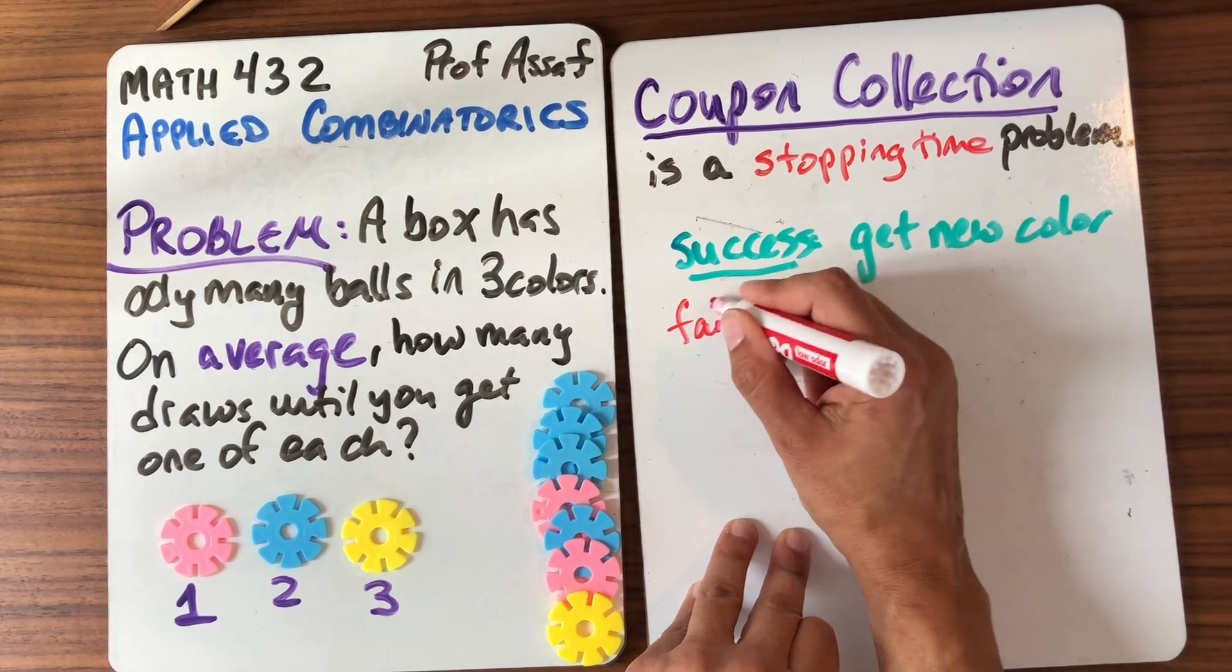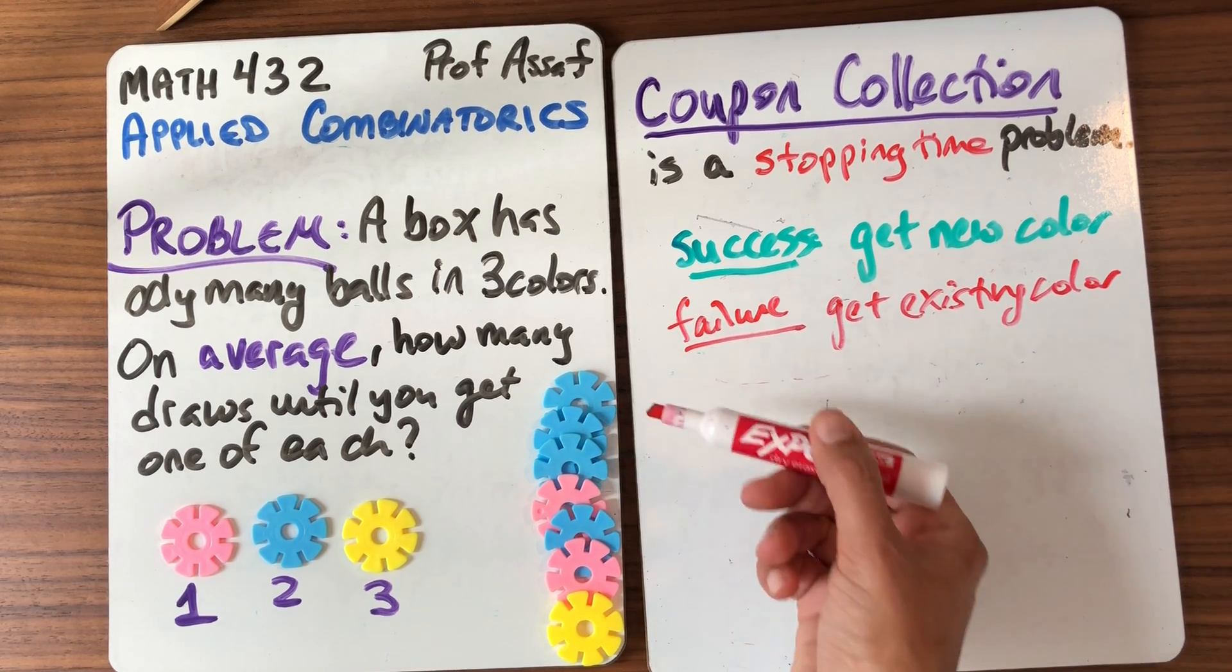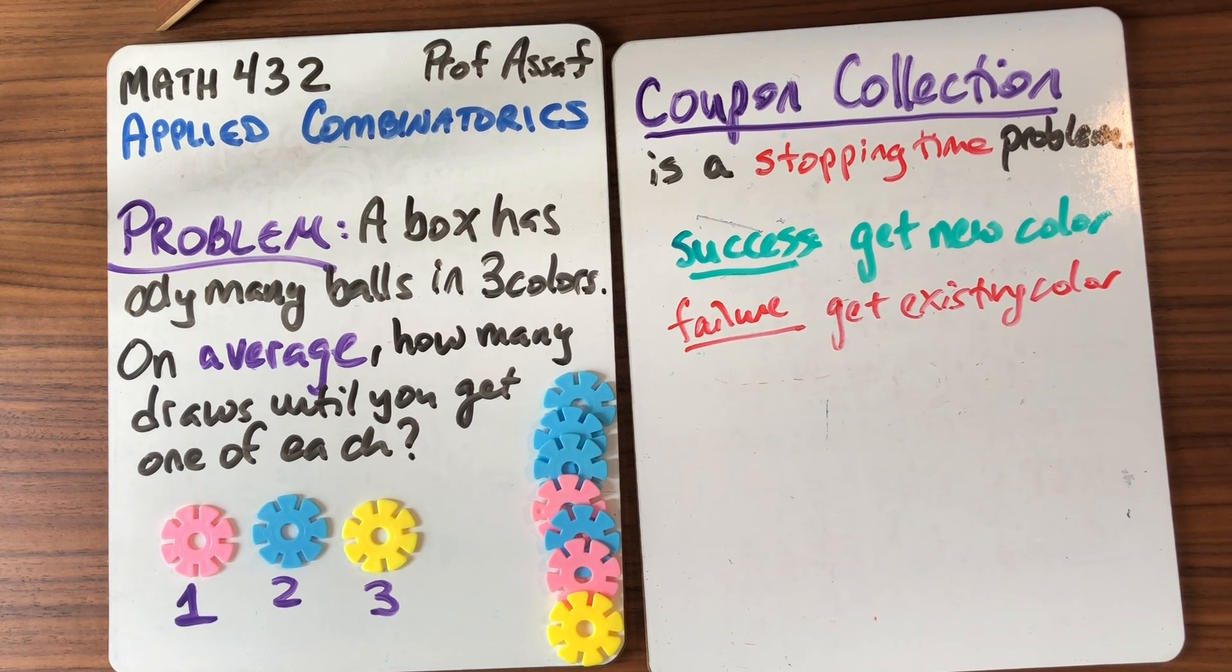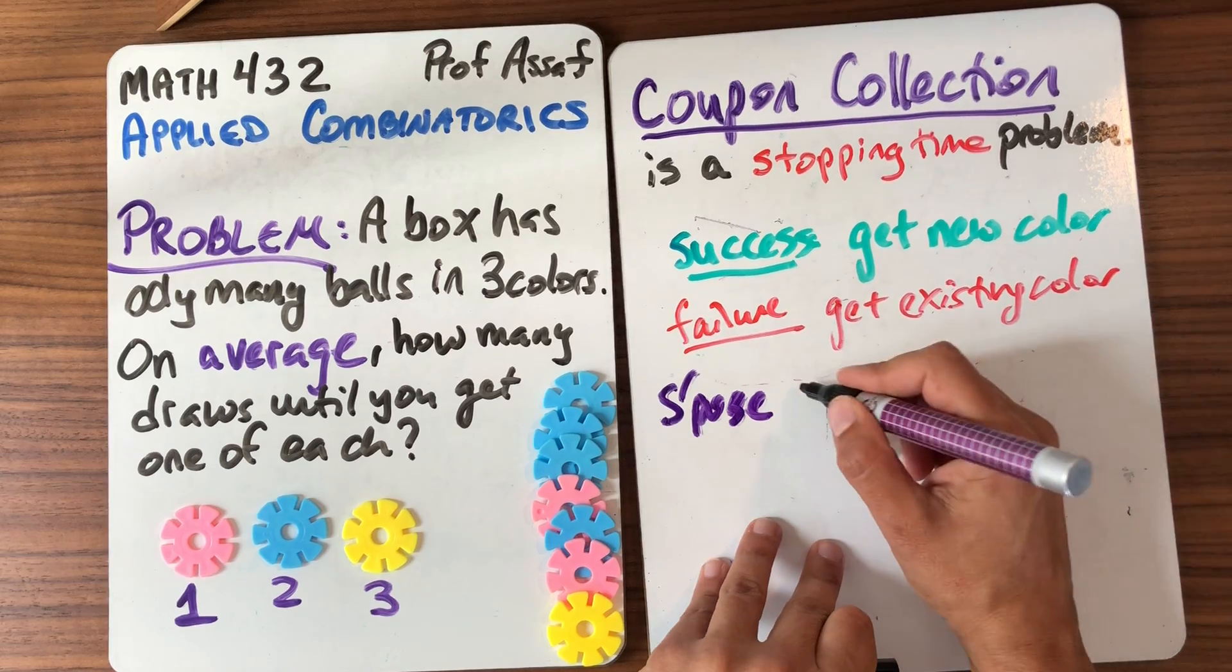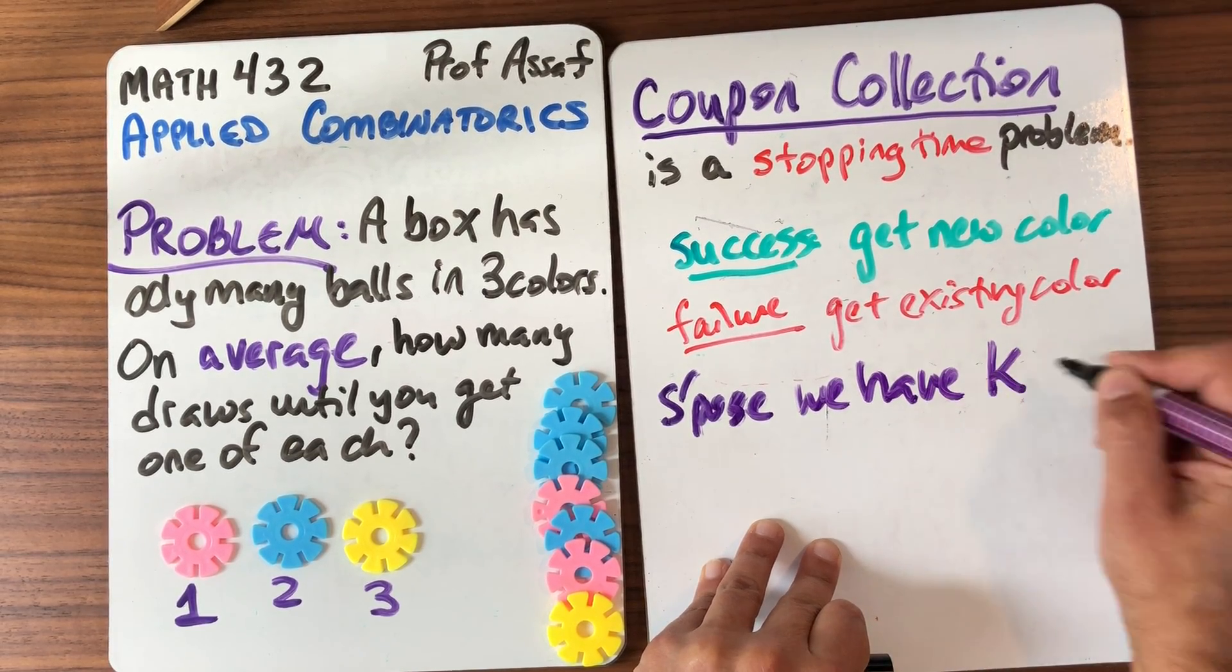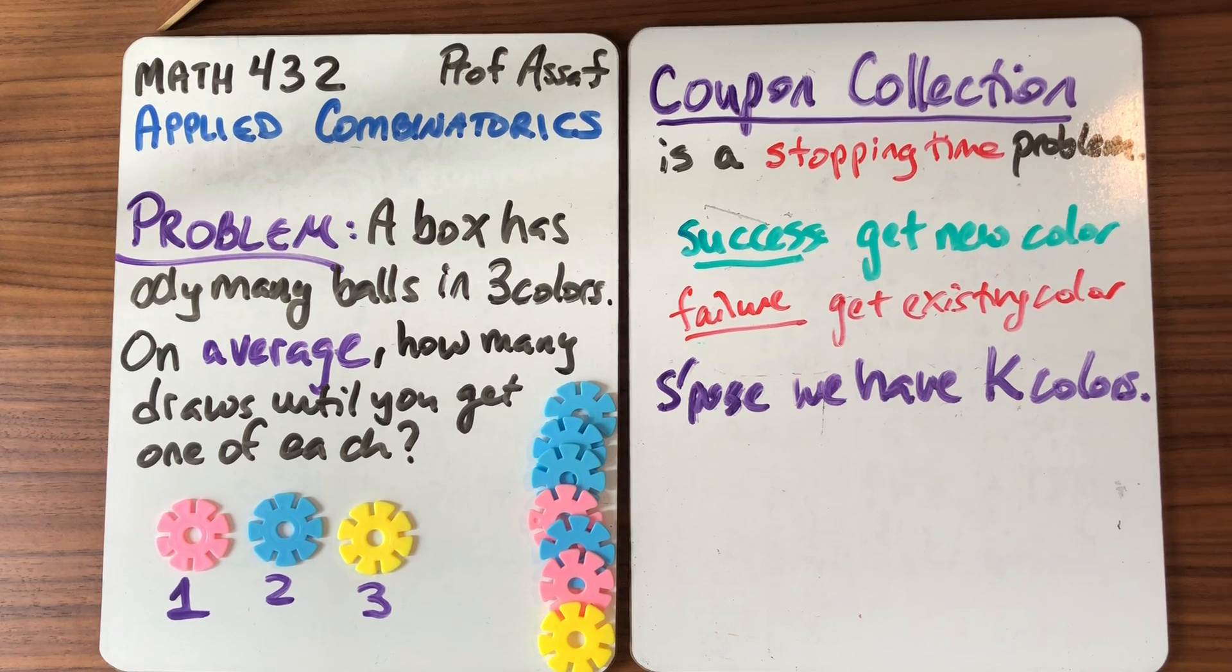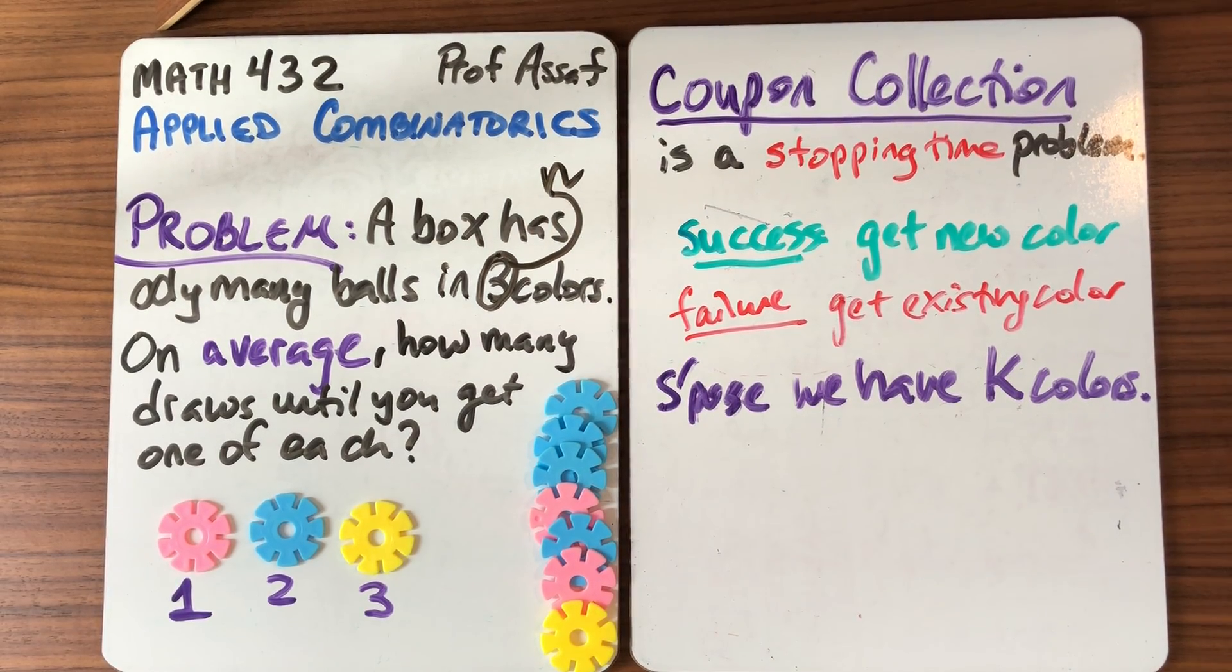And now what's a failure? Failure is everything else. Failure, for each trial, is get an existing color. So we can see here, these were all failures. And so I can think about, I know how many successes I'm going to have, and what I don't know is how many failures I'm going to have, or how many total trials I'm going to have. But let's see if we can at least figure out the probability of these events. It's obviously going to depend on how many colors I already have. So it depends on my state. So let's suppose we already have k colors. And let's suppose that there are n colors in general. So instead of 3 here, I'm going to change this to an n. And suppose I've already gotten k of them.